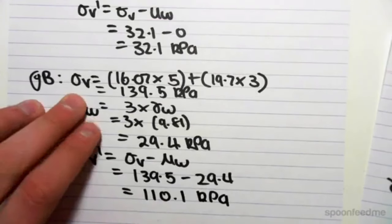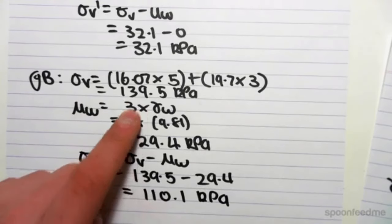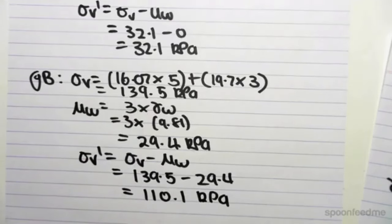So you can see now that the total stress is different from the effective stress. So the total stress at B is 139.5. The effective stress, which is just the stress of the soil, ignoring the stress of the water, is 110.1 kPa. I hope that helps.